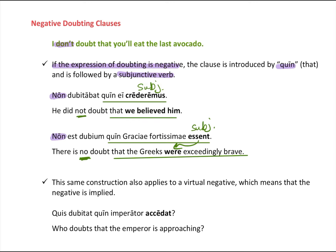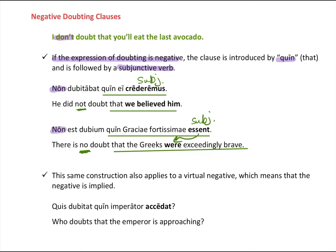Here's a question: quis dubitat quin imperator accedat — with accedat in the subjunctive. This is called a virtual negative, meaning the negative is implied. There is no non, but the question 'who doubts that the emperor is approaching?' implies the answer is 'no one.' When put into a statement, 'no one doubts that the emperor is approaching,' the negative is made explicit — that's how the virtual negative works.